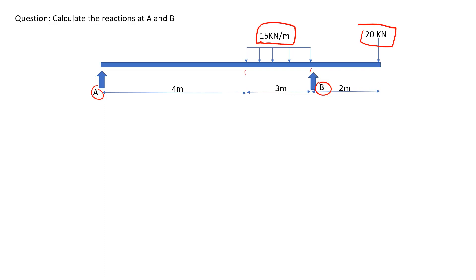Before we construct our free body diagram, let's convert this uniformly distributed load of 15 kilonewtons per meter into a point load, similar to the 20 kilonewtons. We do that by multiplying 15 kilonewtons per meter by three meters, giving us 45 kilonewtons.